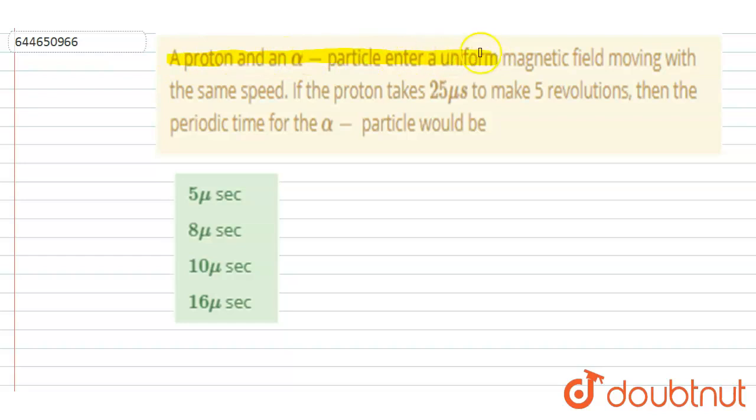alpha particle enters a uniform magnetic field moving with the same speed. If the proton takes 25 microseconds for 5 revolutions, then the time period for the alpha particle will be... So if you see, they both enter in a uniform same magnetic field moving with the same speed.